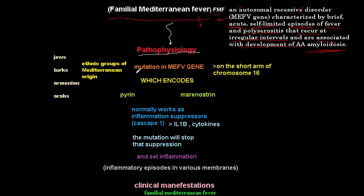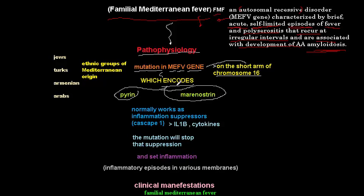In FMF, there is a mutation in the MEFV gene, which is located on the short arm of chromosome 16. The function of this gene is to encode proteins like pyrin and marinostrin. The function of these proteins is to suppress certain inflammatory reactions in the body. Normally, caspase-1 activates interleukin-1 beta and other cytokines that lead to inflammation.